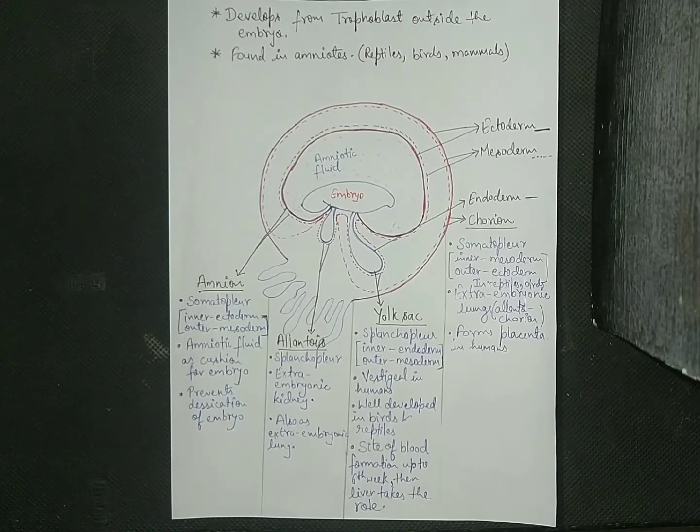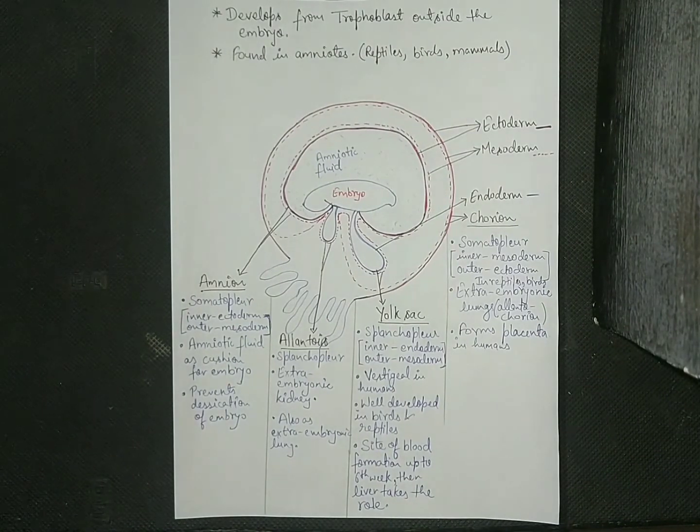It is the site of blood formation up to sixth week, and then later on this role shifts to the liver.